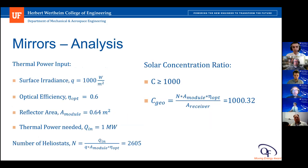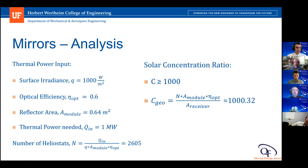We performed a thermal analysis on the mirrors in order to scale our heliostat module up to a full-scale solar collection field. To reach the requested power input of one megawatt, the field would need to consist of 2,605 heliostats. This number was found using a surface irradiance of 1,000 watts per meter squared and an optical efficiency of 60%, which assumes a worst-case scenario based on optical losses due to tracking errors and thermal resistance. The solar concentration ratio was also calculated using the field size, and its calculation is shown on the right-hand side of the slide.